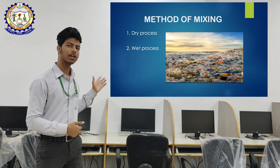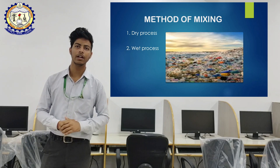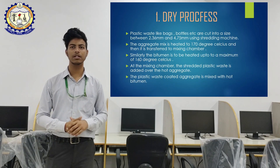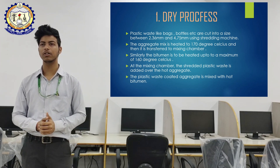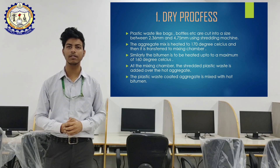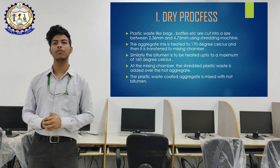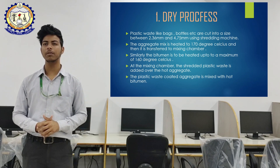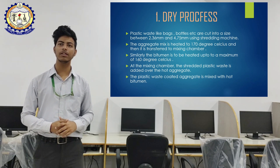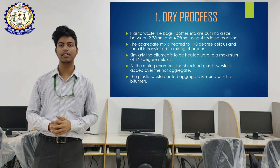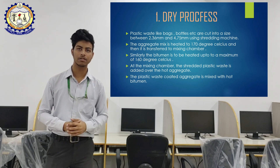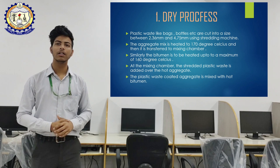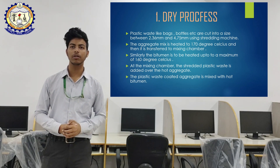There are two methods of mixing: the dry process and the wet process. In the dry process, plastic waste like bags and bottles are cut into sizes of 2.36 to 4.75 mm using a shredding machine. The aggregate mix is then heated to 170 degrees Celsius and transferred to a mixing chamber.